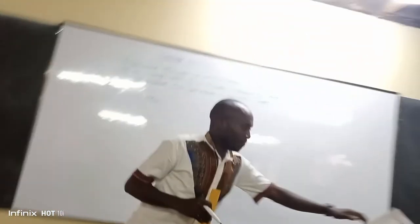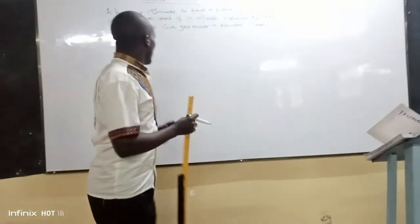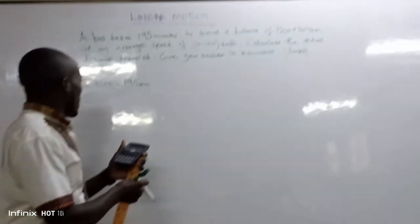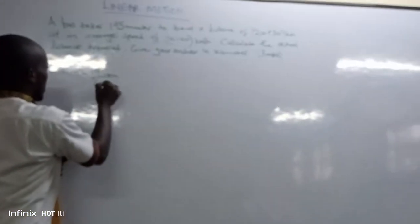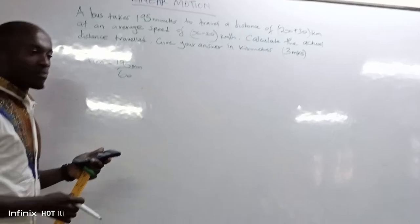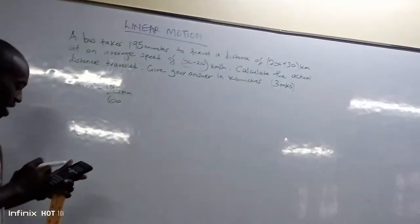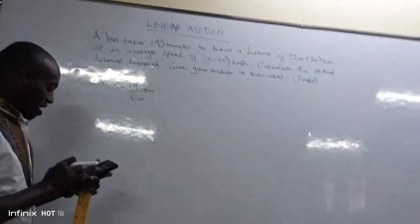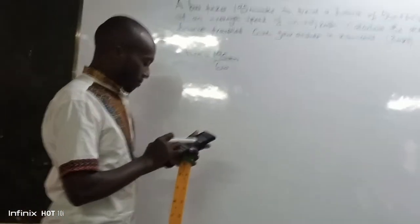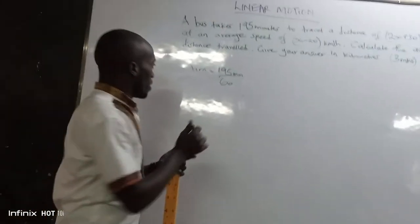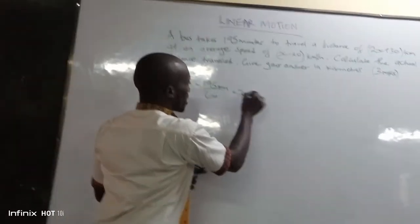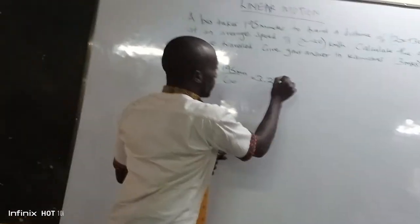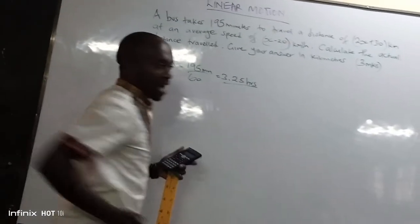In terms of hours, 195 divided by 60 — because 60 minutes makes one hour — gives us 3.25 hours.